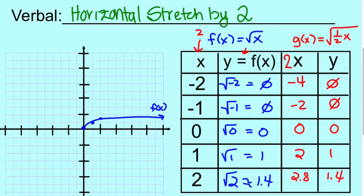Let's go ahead and graph those. 0, 0, over 2, up 1, over 2.8, up 1.4. And there is our g of x function.